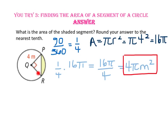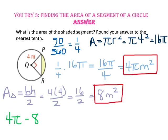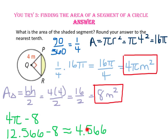Now find the area of triangle PQR. The area of a triangle is base times height divided by 2. Since the base and height are perpendicular and both equal two radii of 4 meters, the area is 4 times 4 divided by 2 = 8 square meters. Using the calculator, 4π is approximately 12.566; subtracting 8 gives approximately 4.566, which rounds to 4.6 square meters.